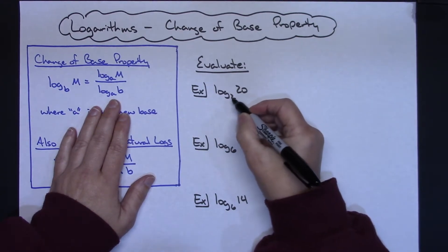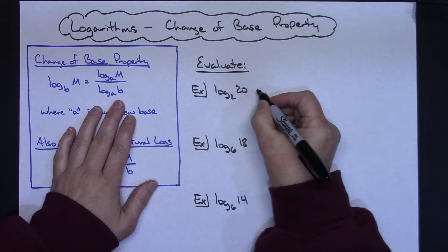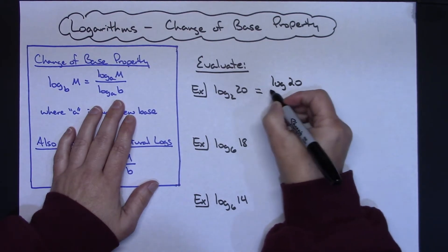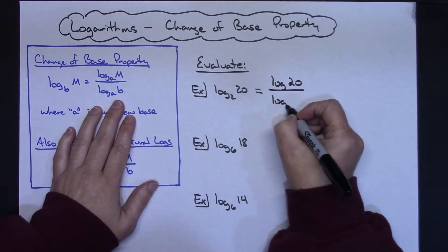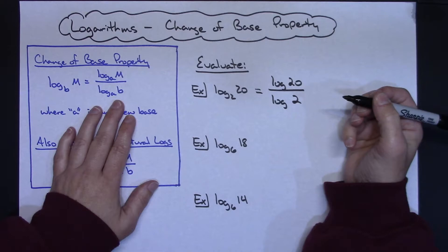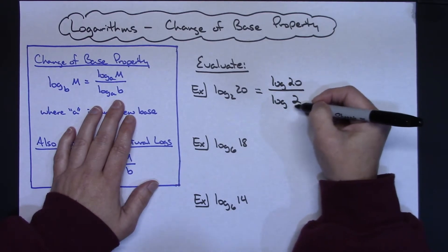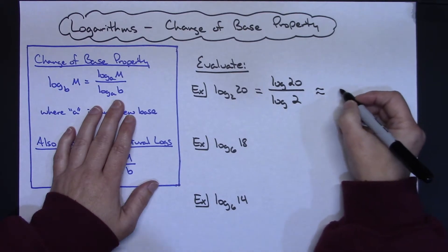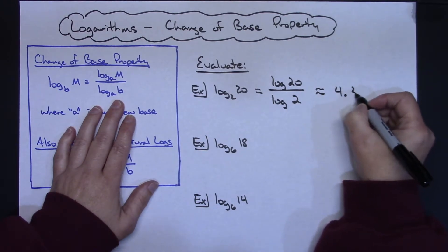20 would be my M and the 2 would be my B, so I could rewrite this as the log of 20 over the log of 2. Notice then I'm changing the base to 10. Then I could use my calculator, punch that in, and get the decimal equivalent which would be about 4.322.